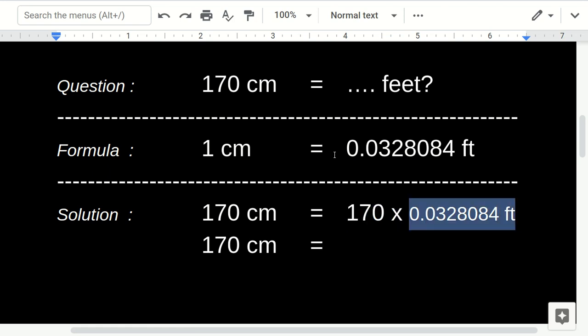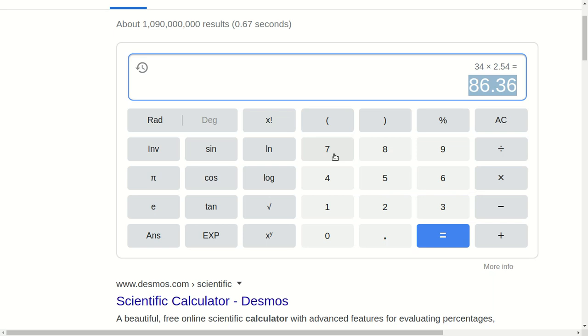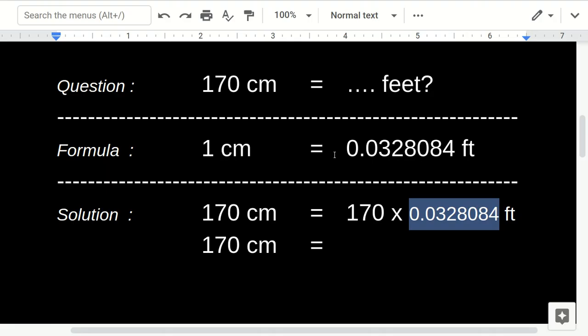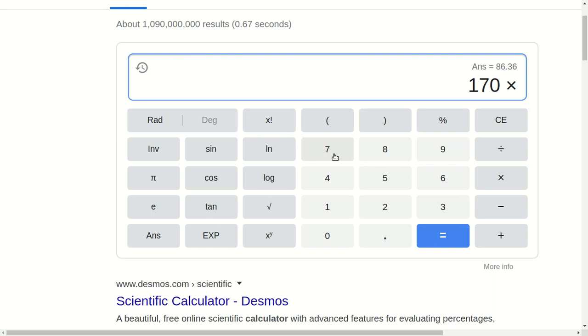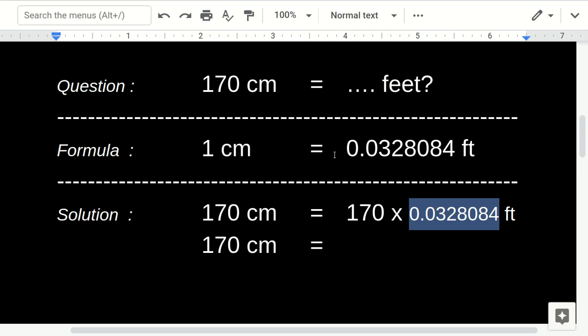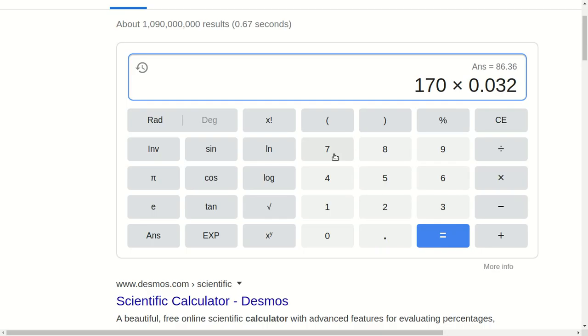170 times—we cannot paste it, so let me type: 0.0328084. And that's our answer: 5.577428 feet.